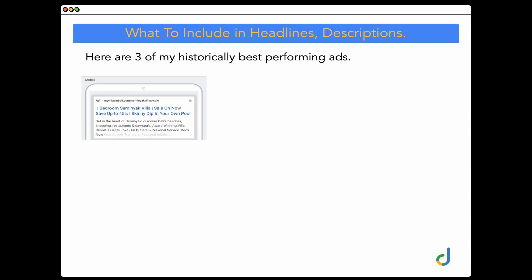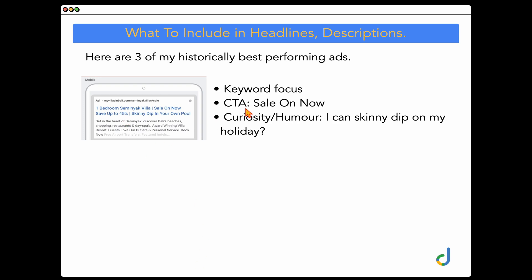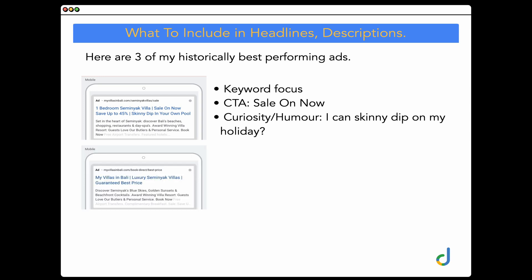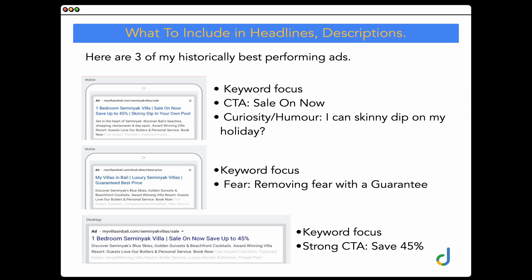Let me show you three of my historically best-performing ads. The first has keyword focus — 'one bedroom Seminyak Villa' — a call to action 'sale on now, save up to 45%,' and an emotional trigger: 'skinny dipping in your own pool.' When competitors were saying 'swim in your private pool,' we generated curiosity and humor — people actually inquired asking if skinny dipping was allowed. Another ad used keyword focus plus a fear-removing emotional trigger: a guaranteed best price. A third used keyword focus and a strong call to action. Those are the four key elements for winning Google Ads ad copy.